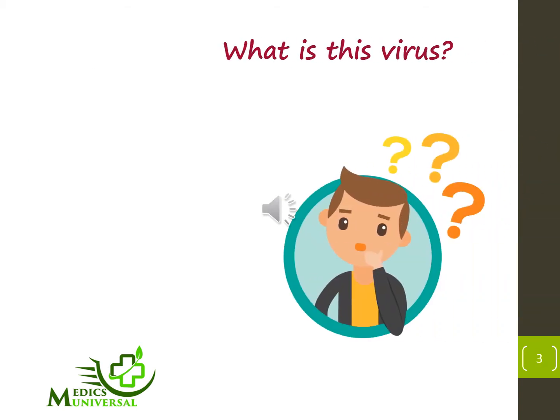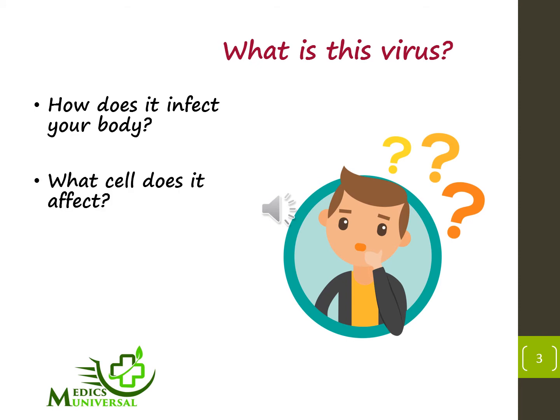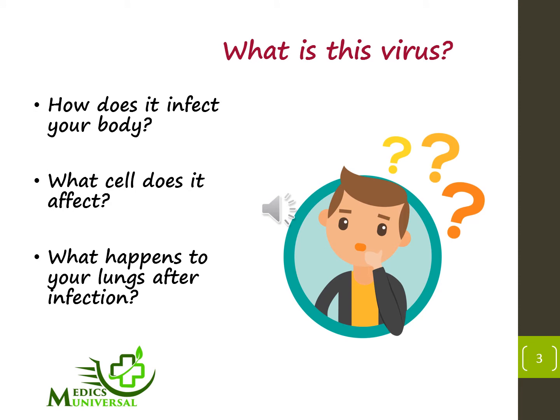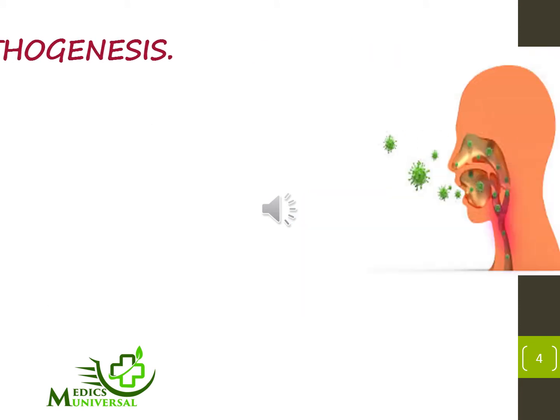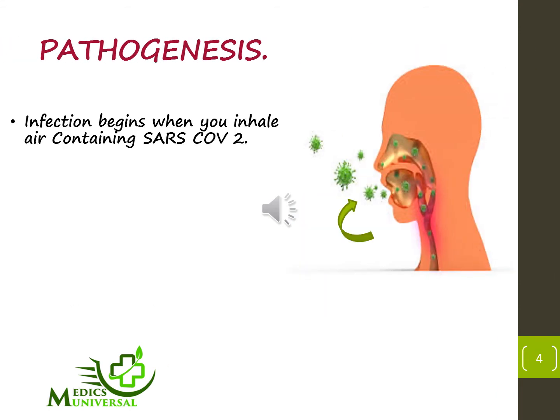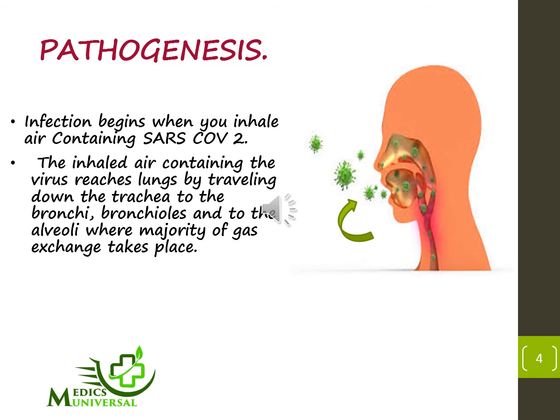What is this virus? How does it infect your body? What cell does it affect? And what really happens to your lungs after infection? Infection begins when you inhale air containing SARS-CoV-2. The inhaled air containing the virus reaches the lungs by traveling down the trachea, to the bronchi, bronchioles, and to the alveoli where the majority of gas exchange takes place.